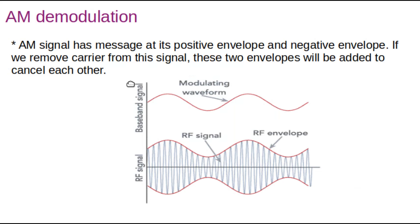Now we will see the process of AM demodulation. Demodulation means getting the original message signal back from the AM signal. We know that an AM signal contains both the carrier and the message. Such an AM signal is transmitted from the transmitting site, and when the signal reaches the receiver, we have to remove the carrier and get the message signal.